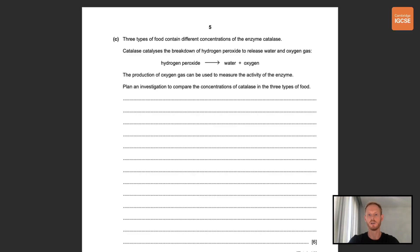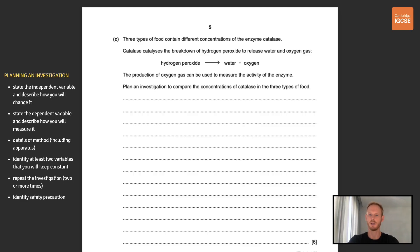Okay next question. Three types of food contain different concentrations of the enzyme catalase. Catalase catalyses the breakdown of hydrogen peroxide to release water and oxygen gas. The production of oxygen gas can be used to measure the activity of the enzyme. Plan an investigation to compare the concentrations of catalase in the three types of food. So the first thing I would typically advise you to do when planning an investigation is to state the independent variable and describe how you will change it. However this experiment is just about comparing three types of food. There's nothing you're actively manipulating so you can leave out that step and begin with the dependent variable instead.